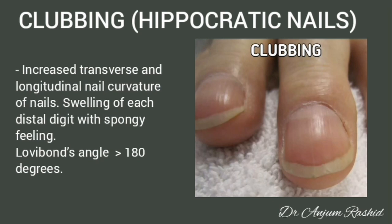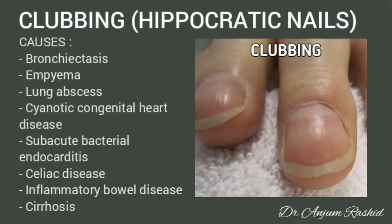Clubbing or Hippocratic nails: there is increased transverse and longitudinal nail curvature, swelling of each distal digit with a spongy feeling. The Lovibond angle, formed between the nail plate and the proximal nail fold, is greater than 180 degrees. Important causes include bronchiectasis, empyema, lung abscess, cyanotic congenital heart disease, subacute bacterial endocarditis, celiac disease, inflammatory bowel disease, and cirrhosis.